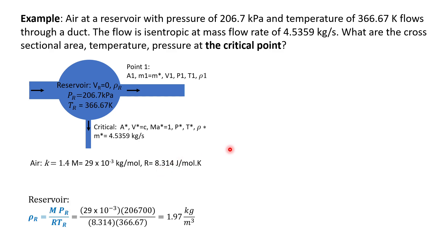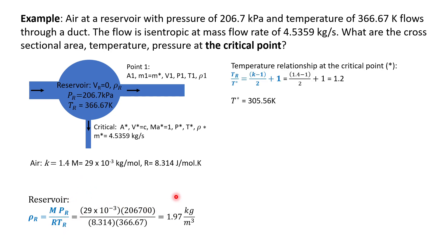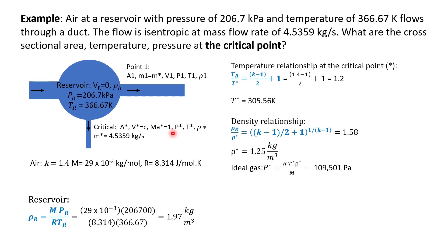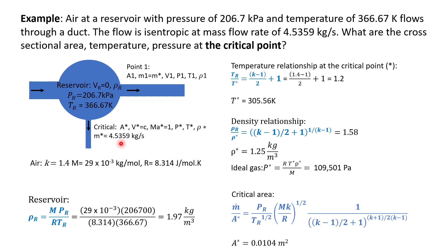First we find the density at the reservoir. Then we use the temperature relationship to find temperature at the critical point, the density relationship to find critical density, and the ideal gas equation to find critical pressure. Finally, we calculate the critical area using the mass data along with the reservoir pressure and temperature.